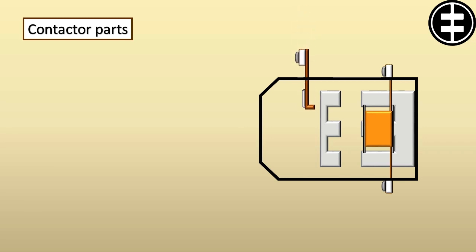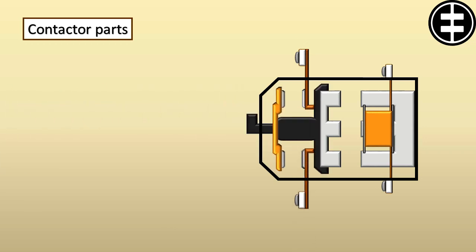Six main contacts for power connection, three are fixed, and the other three are free to move with the movable iron core. These contacts are made from pure copper, and the contact points are made from special alloy to withstand the high starting current and temperature.